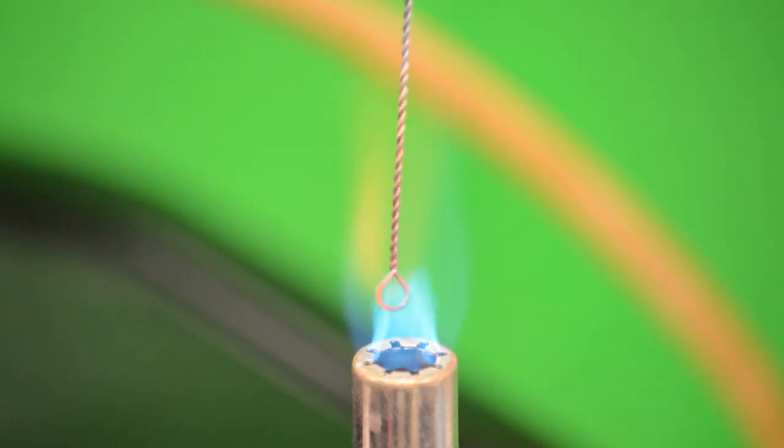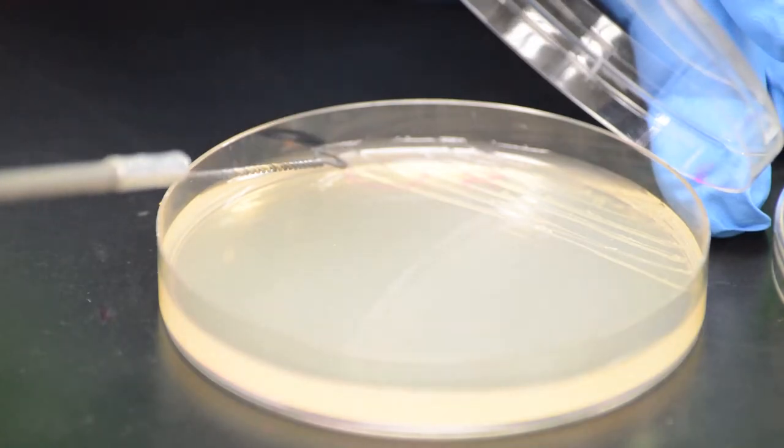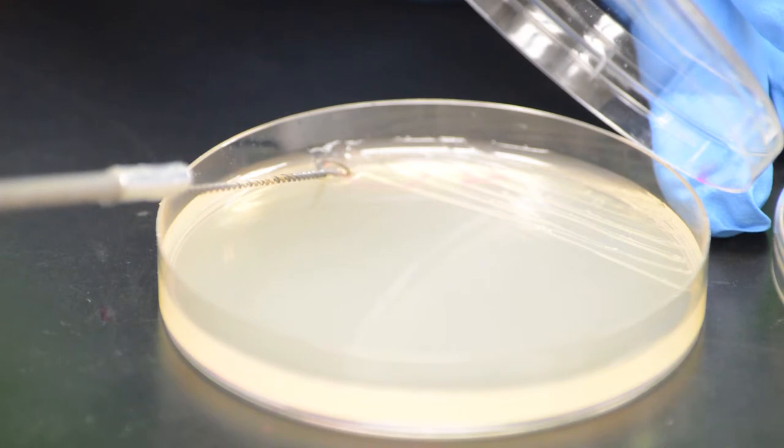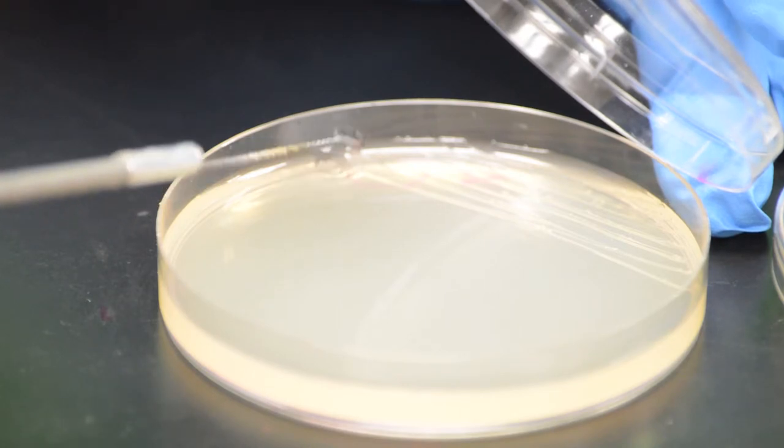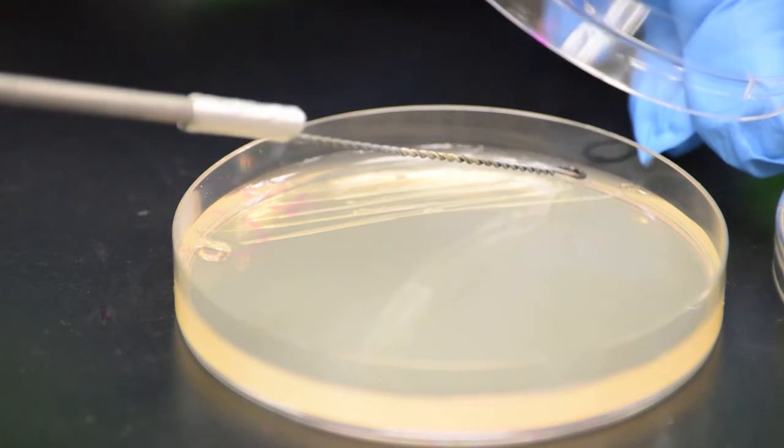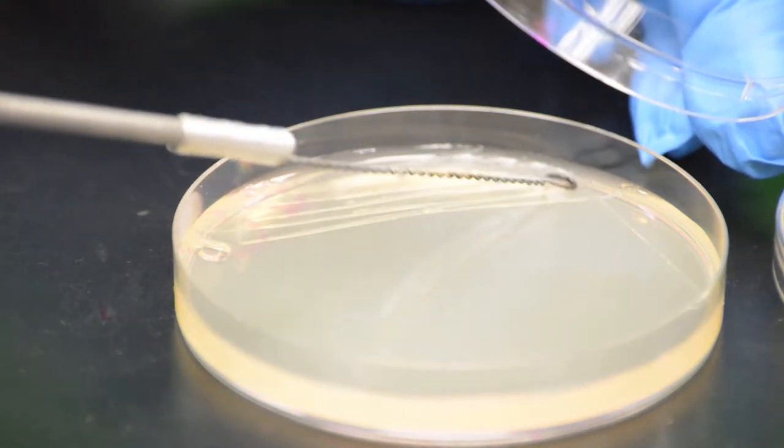Flame the loop until it glows red hot and allow it to cool. Following the pattern shown, carefully place the cooled loop at the edge of the last set of streaks and, using a zigzag motion, spread the culture over the next quarter of the plate.